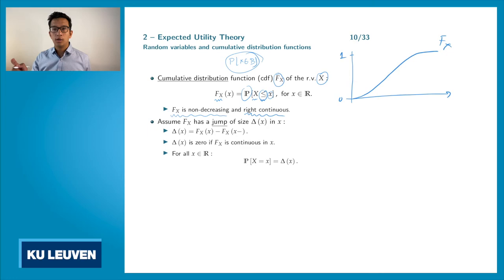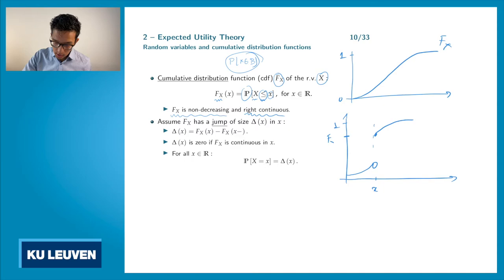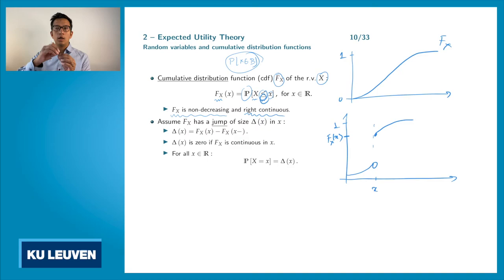In the case where F_X is continuous and always differentiable, we have that. However, we can look at another situation where the distribution function makes a jump. Assume the jump occurs at value x. Now the function value at x is here, and because we have the equality in the definition of the distribution function, the CDF must be right continuous. So if we have a jump, the function value must always be on the right side; otherwise we do not have a right continuous distribution function.